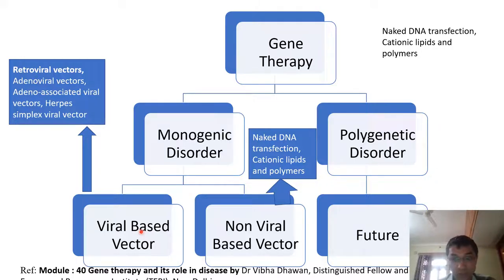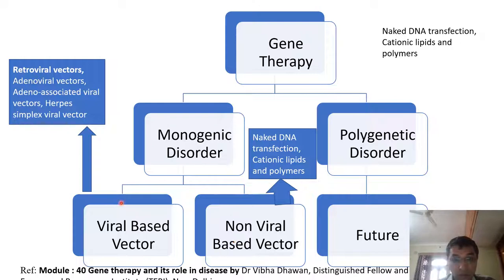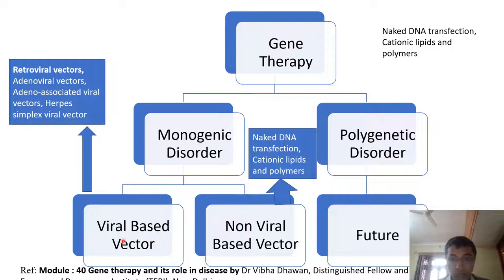Moving on to non-viral vectors — viral vectors cause pathogenicity and other problems. In non-viral vectors, you will see naked DNA transfection and cationic lipid-polymer complexes. From a safety standpoint, viral vectors are not safe; this is the major problem. However, even after safety considerations, viral vectors are still used for gene therapy.